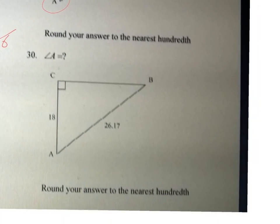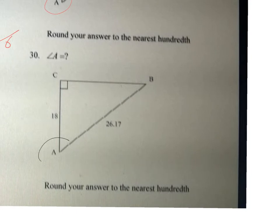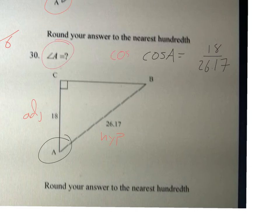Alright, last one. Here we go. Again, we're finding angle A. So angle A. Well, now it looks like we have the adjacent and the hypotenuse. That's a cosine function. So we're going to write the cosine of A equals the adjacent, which is 18, over the hypotenuse, which is 26.17. You need to undo the cosine again, because we want to know what A is. We undo the cosine with the arc cosine. That cancels these things out, making angle A equal the arc cosine of 18 over 26.17.